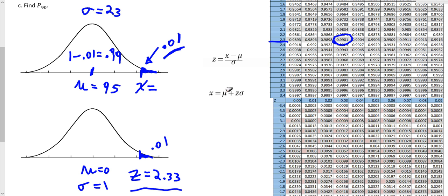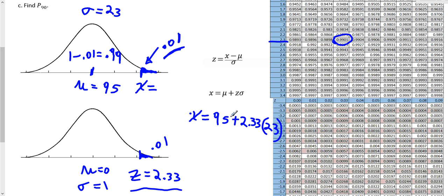We're going to use this formula and plug in the Z score we found to get the corresponding X value that separates the top 1% of electric bills. So X = μ + Zσ = 95 + 2.33 × 23. That gives us 95 plus 2.33 times 23. And 2.33 times 23 equals 53.59.